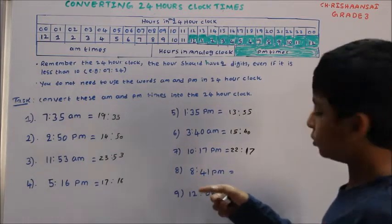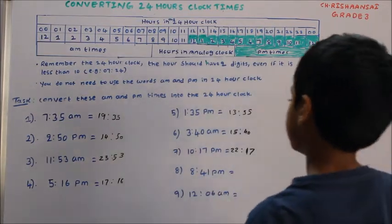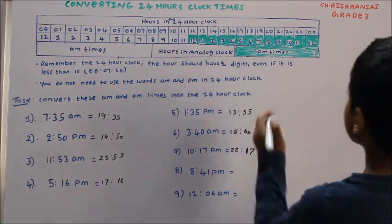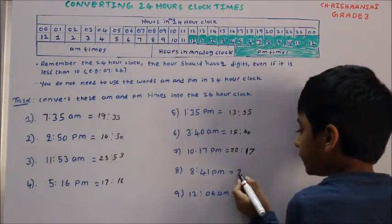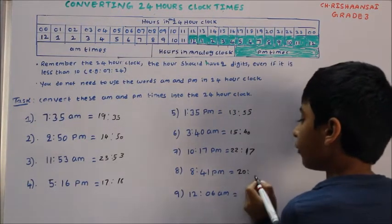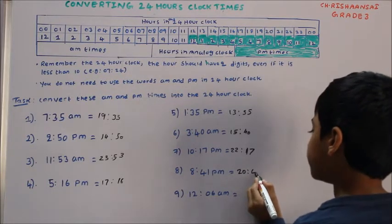8:41. So here is 8 and up is 20, so write 20, two dots, and 41.